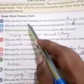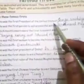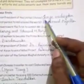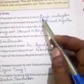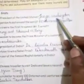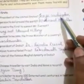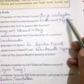Number 1. Who was the first president of the United States? George Washington. G-E-O-R-G-E W-A-S-H-I-N-G-T-O-N.